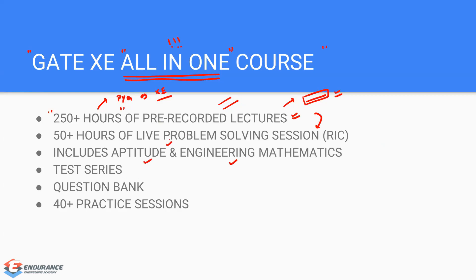The All-in-One course also includes a complete aptitude course and a complete engineering mathematics course. In addition, the test series, question bank, and practice sessions are all included. So everything you need for GATE XC preparation is in this single course. This is ideal for those who have not gone for any coaching or who are interested in online coaching for GATE XC.